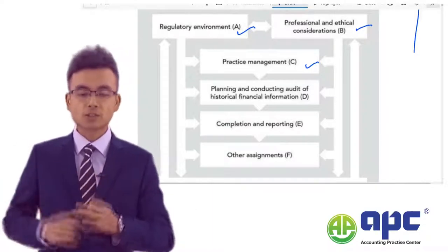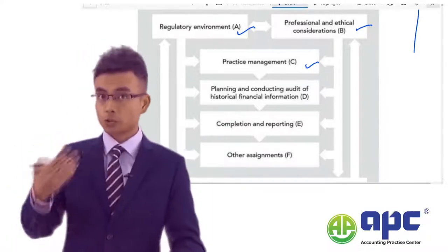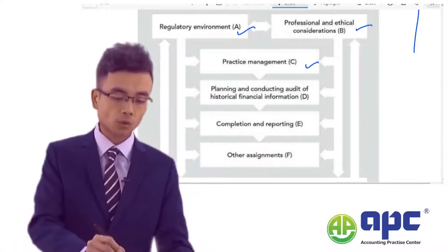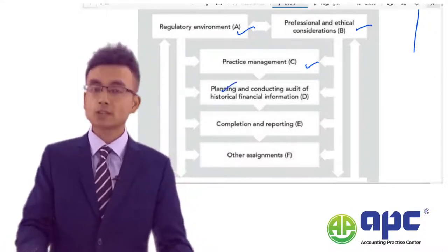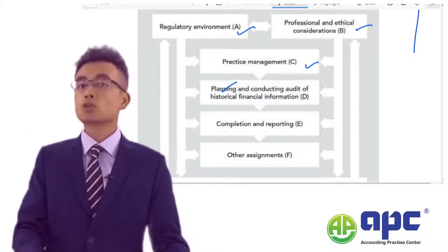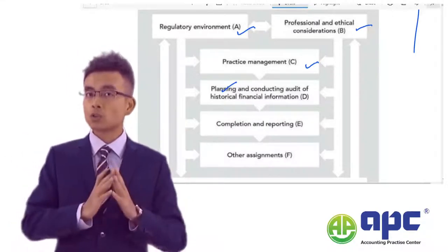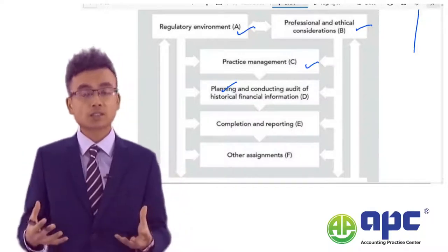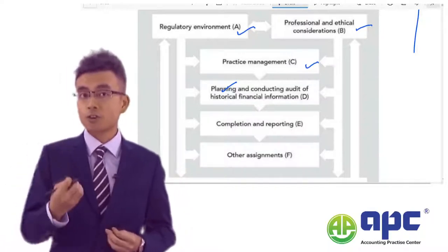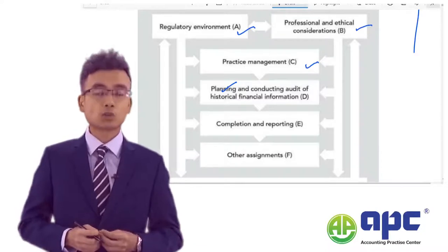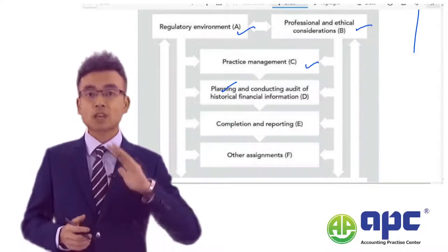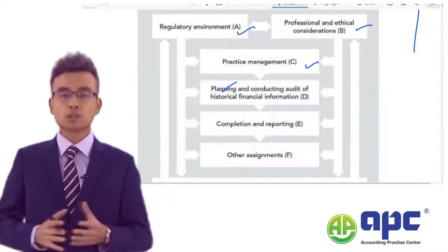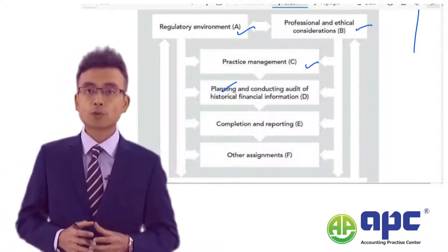Part D covers conducting the audit. First of all, we should plan our audit, and then decide whether we should use tests of control to go through the client's internal control systems, including the sales cycle, purchases cycle, payroll cycle, PPE cycle, and so on.